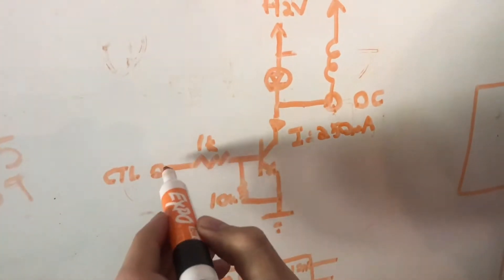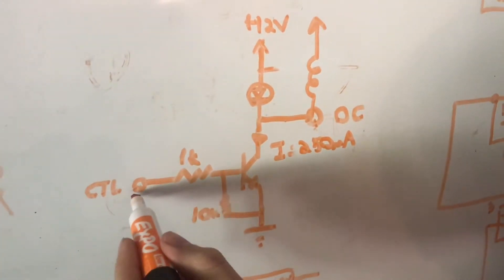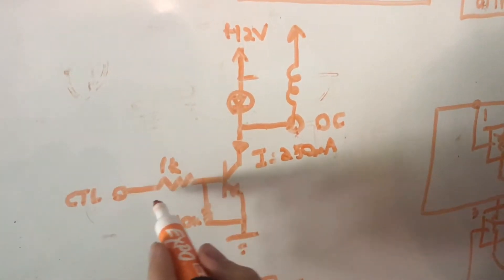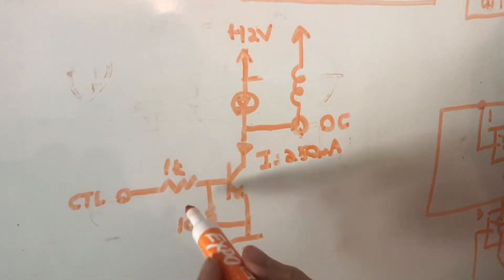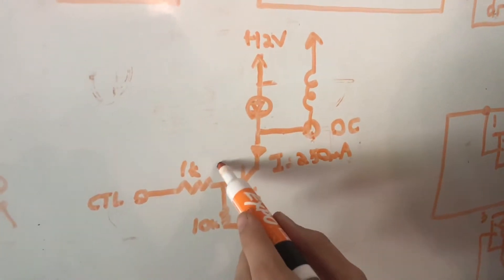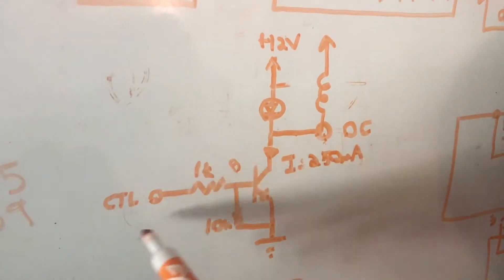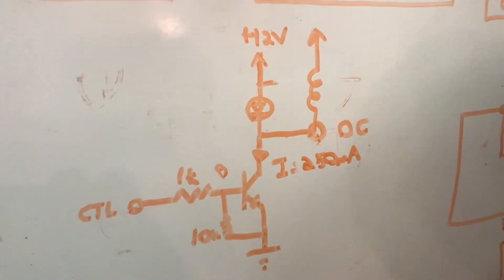And you're able to control the transistor using a very small signal from what I've labeled the CTL line. In order to do that, you just need a 1k resistor, and this 10k resistor pulls the base of the transistor to ground so that whenever nothing is connected to the control line, it defaults to off.